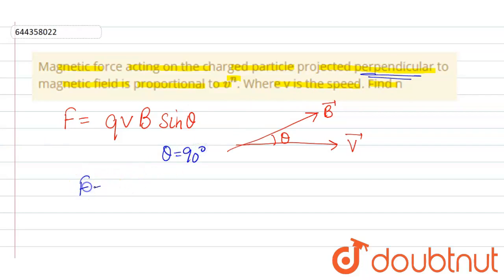So putting the value here we get F equals QVB sin 90. Sin 90 is 1, that means F equals QVB.